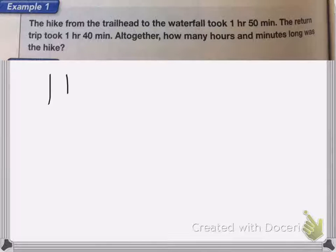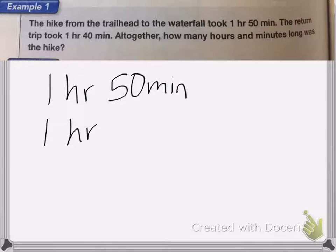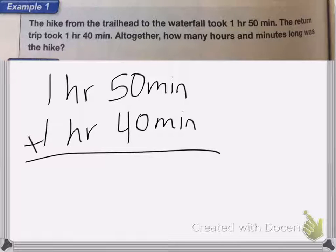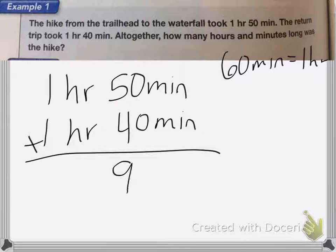So I'm going to add together these two amounts to figure out how long the trip actually took. Now in this case, we need to remember that 60 minutes equals one hour. So when I add my minutes together, if I get more than 60 minutes, I'll need to convert it into hours. So let's add it up. 50 plus 40 is 90 minutes. That is a lot more than 60.